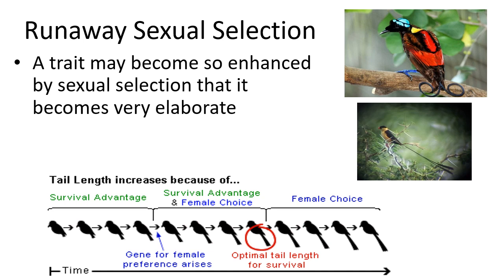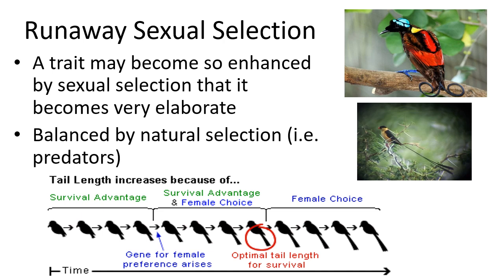Sometimes sexual selection results in very elaborate traits, which we call runaway sexual selection — a trait becomes so enhanced that it creates an extreme structure. Birds of paradise have amazing multicolored, elaborate feathers; flycatchers have very large tails. This is generally balanced by natural selection — at some point the tail becomes so large it disrupts the bird's ability to fly, or the coloration becomes so bright it makes the bird more susceptible to predators.